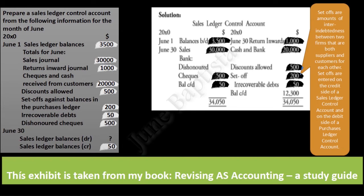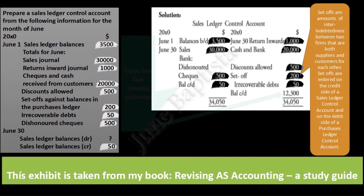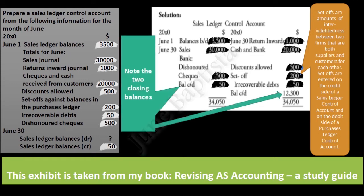On balancing the account, we get a balance carried down of $12,300 representing the business's closing debtors. Note the two closing balances: the balance carried down on the debit side is a credit balance representing the creditors of the business for any of the reasons outlined in the previous slide.